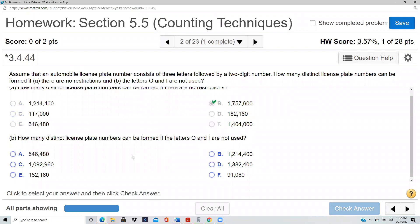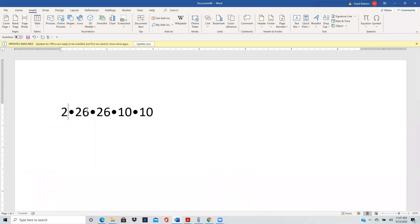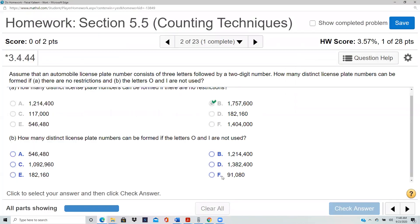How many distinct license plates can be formed if the letters O and I are not used? So if O and I are not used, then instead of 26 we have only 24 letters available. So we go back. All these 26s will now become 24s. So it'll be 24 cubed times 100. So that'd be 24 to the power 3, which is 13,824 and then two zeros, so 1,382,400.